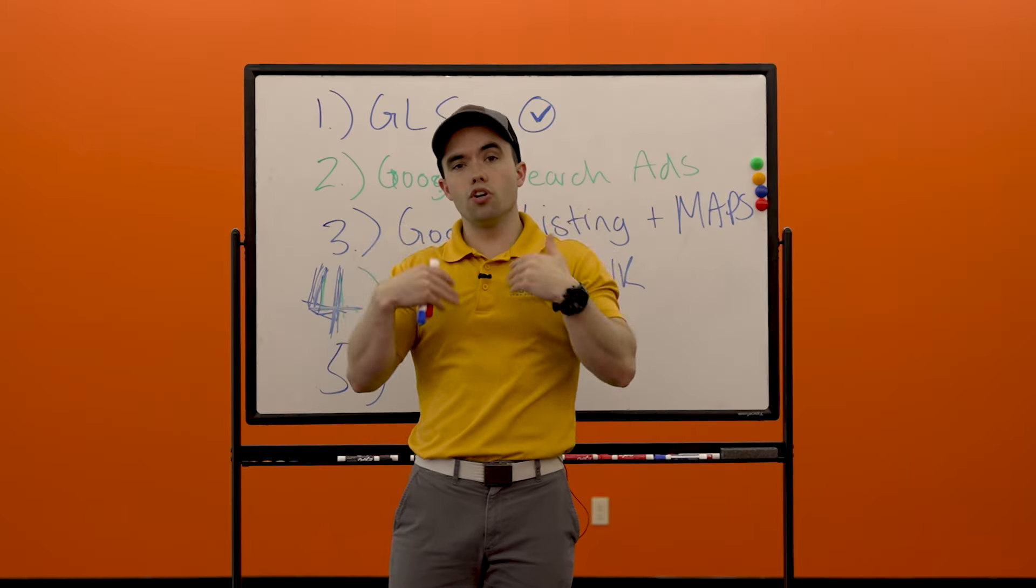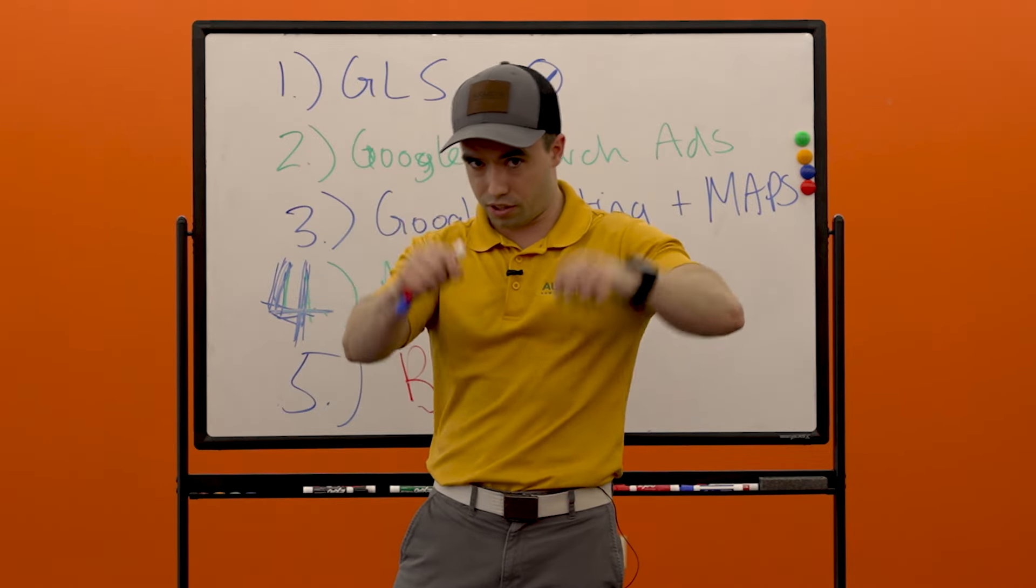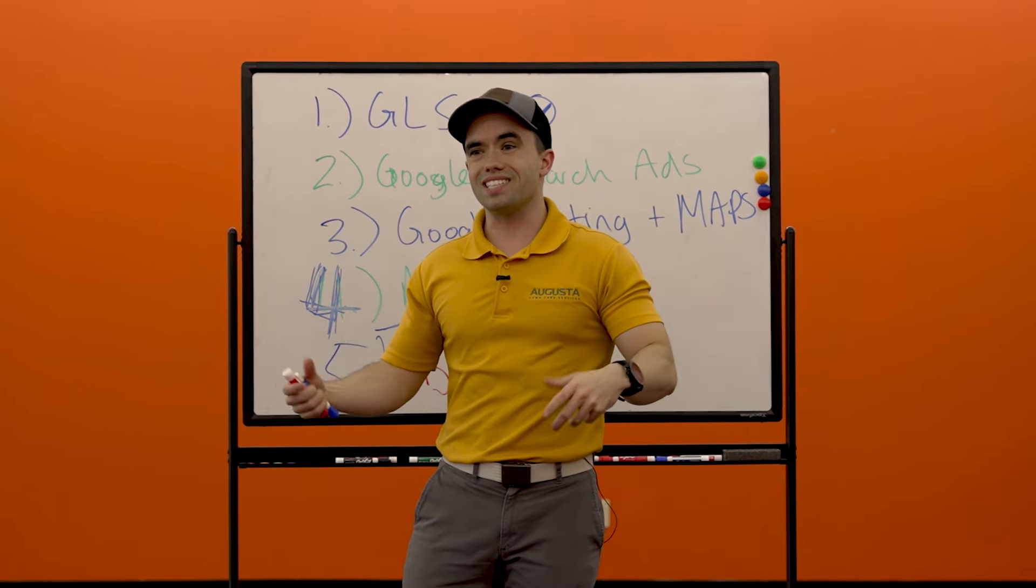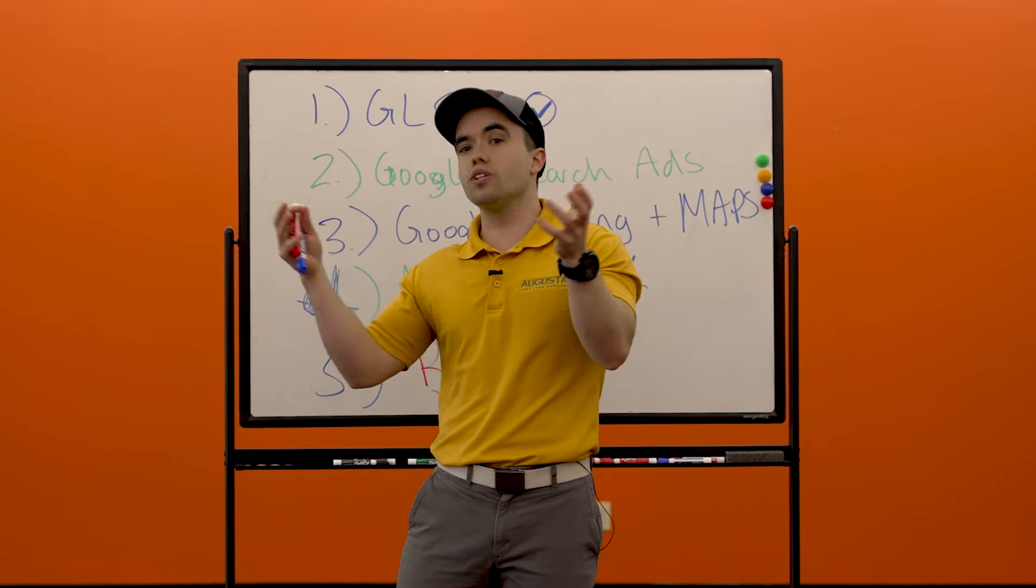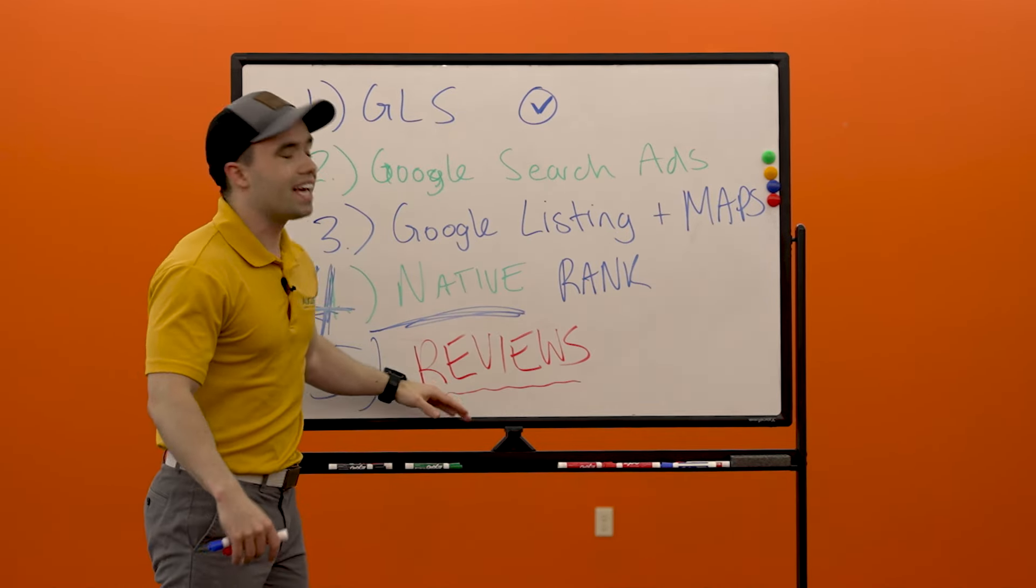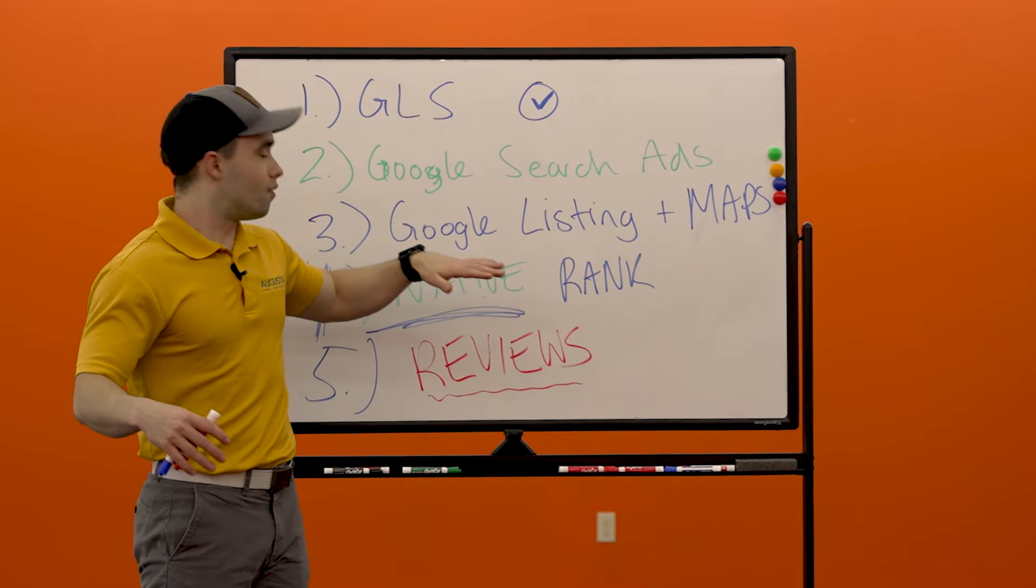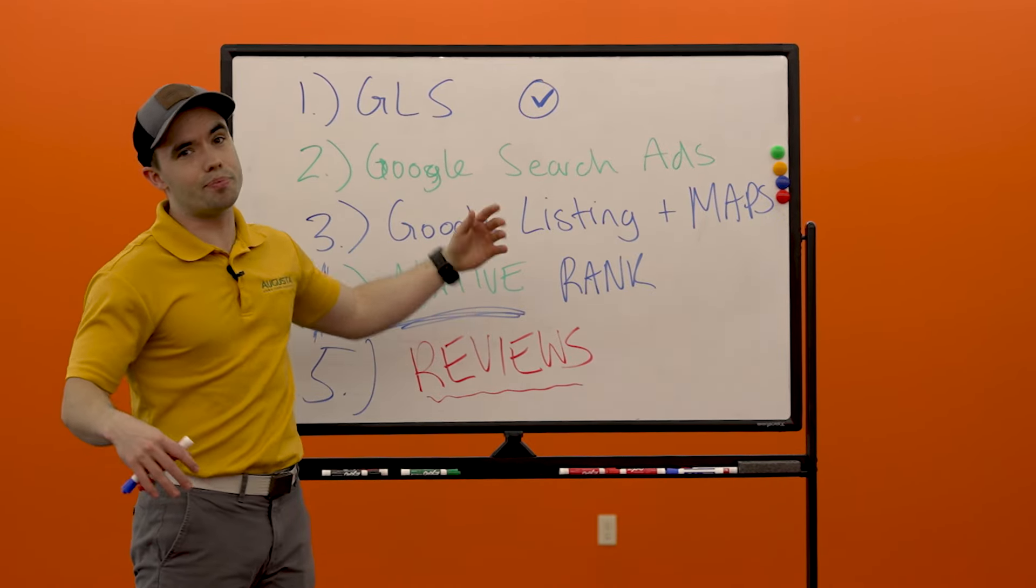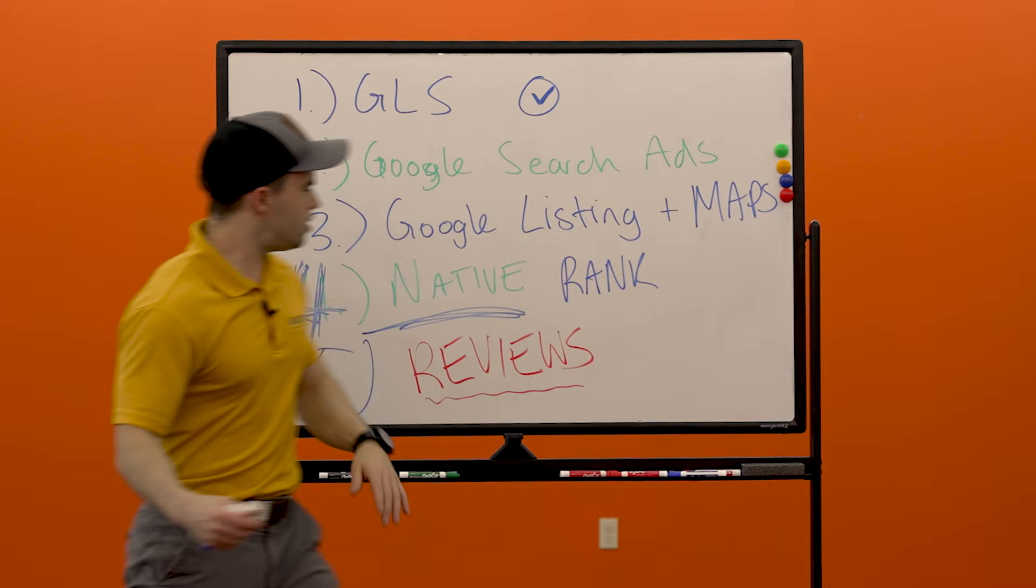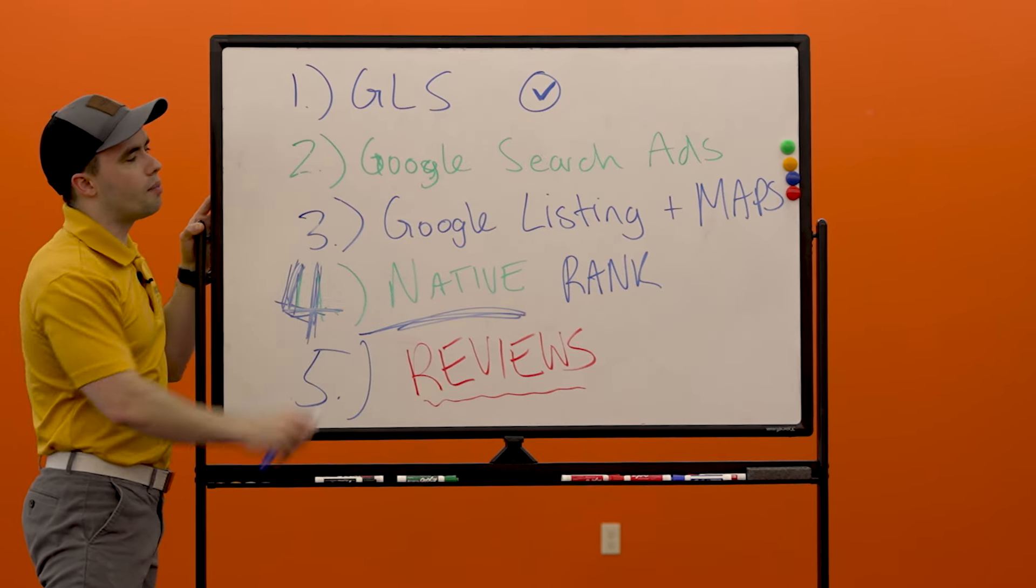You'll rank way better in all these categories because Google will trust you. Think about it from Google's perspective. If they're going to refer you as the user searching something on Google, they're going to go to the place that everyone is talking about and everyone's already been to and saying positive things. And so getting Google reviews gives you a lot of authority in the mind of Google and it's going to really outrank a lot of other businesses that are competing with you. Use these five things to get more customers and outrank your competition on Google.